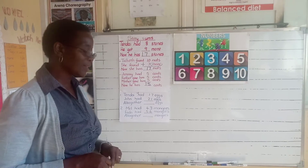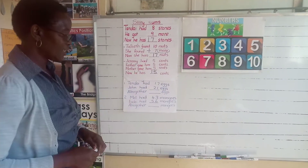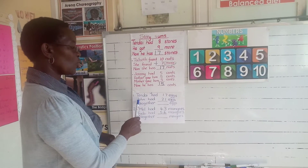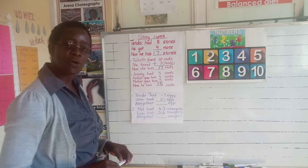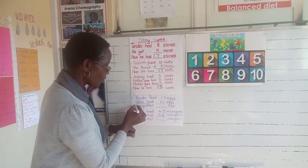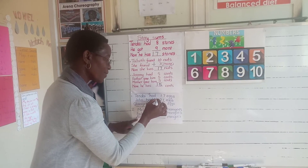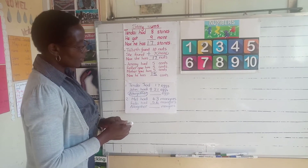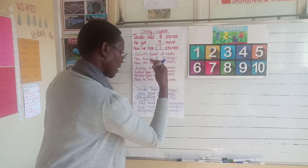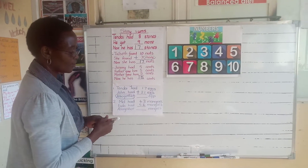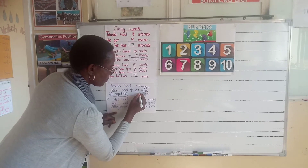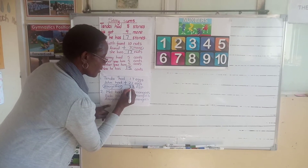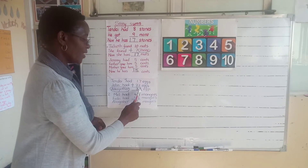Now let's look at another example, but we're using bigger numbers. We have numbers 17 and 21. Our keyword to know what we're doing is 'all together,' which means we are adding. So when we are adding, we start with the units on the right hand side. You add seven plus one — what do you get? Eight. You put your eight in. Then you come to the tens side and add one plus two, and you get three. So all together, they have 38 eggs.